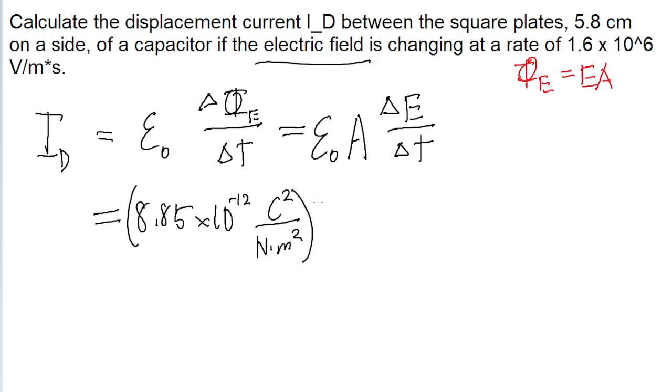And multiply by the area of the capacitors. We're given the side length of the square capacitors, it's 5.8 centimeters. So we'll square this to get the area of the capacitors.